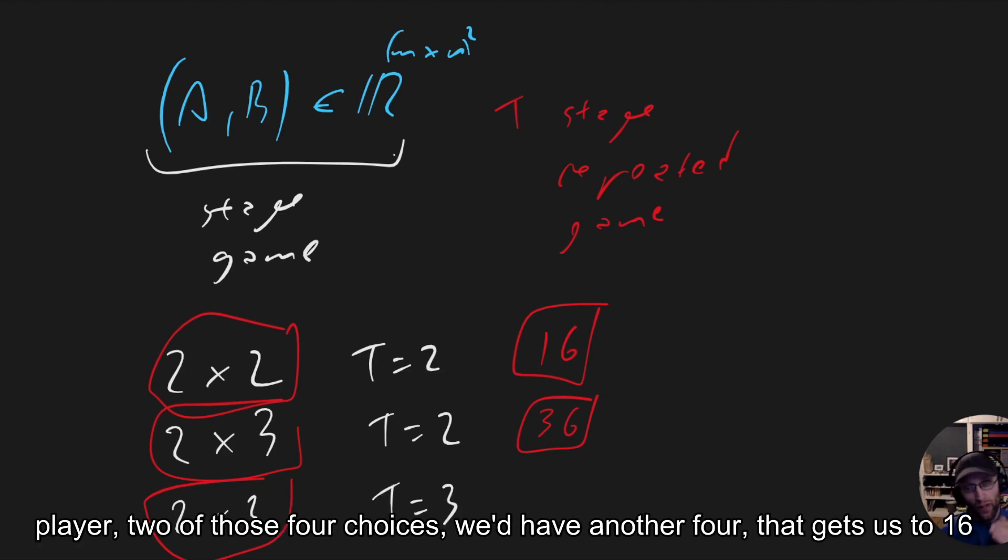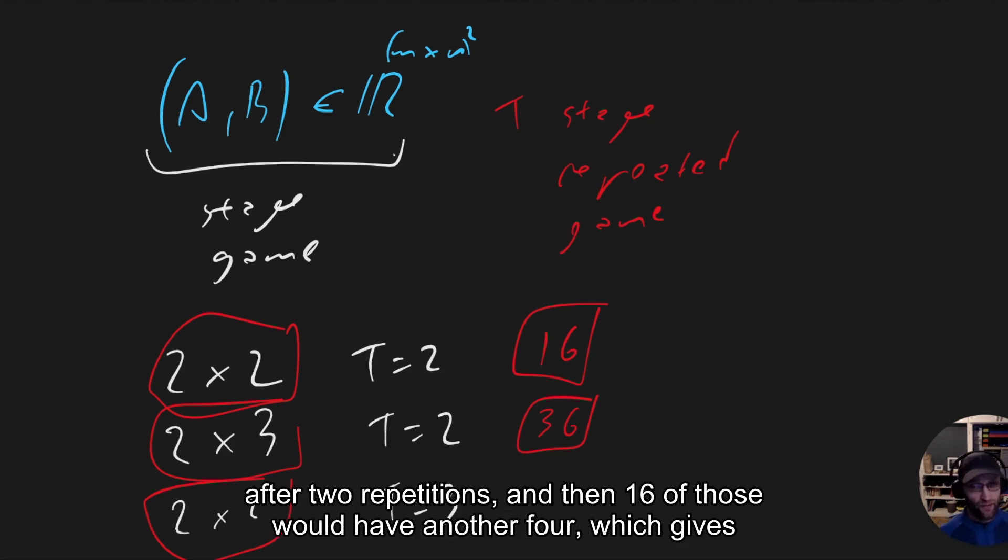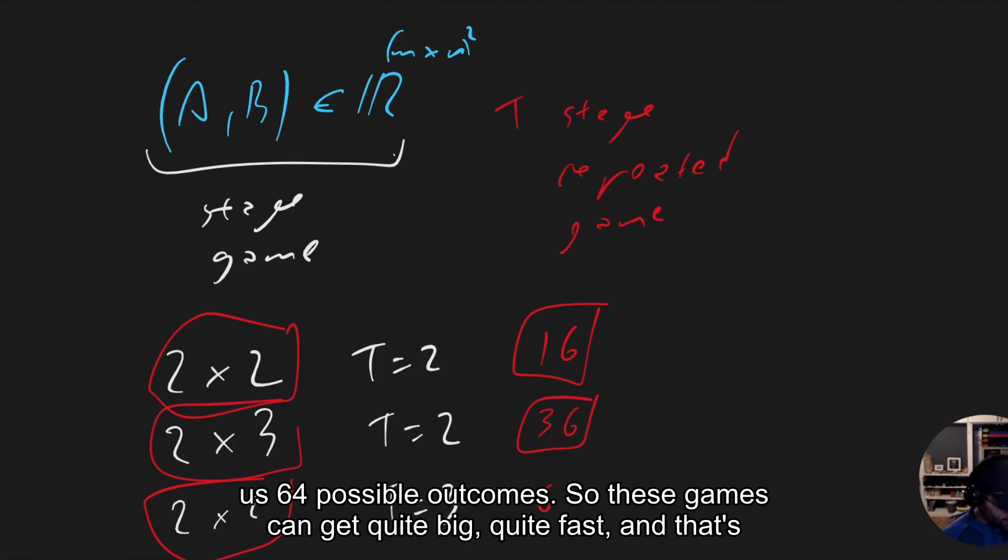To those four choices, we'd have another four. That gets us to 16 after two repetitions. And then 16 of those would have another four, which gives us 64 possible outcomes.